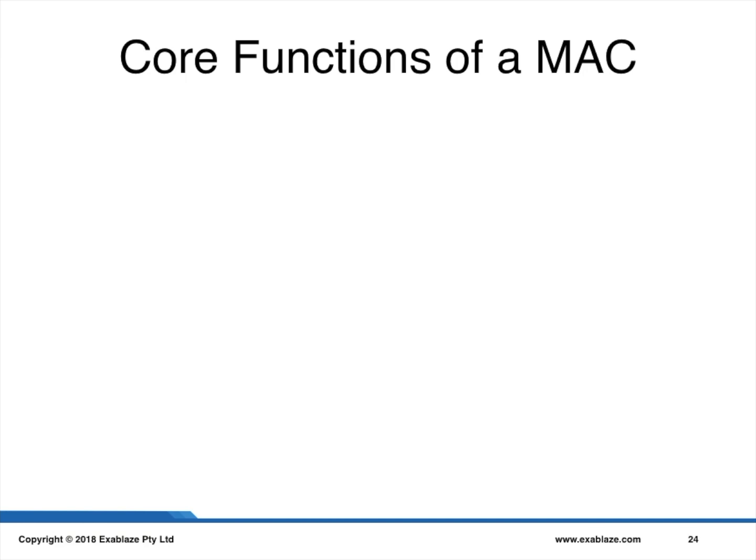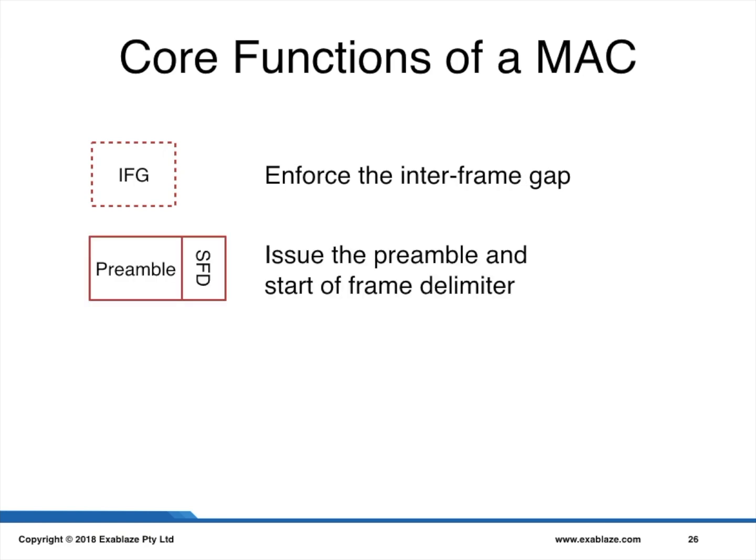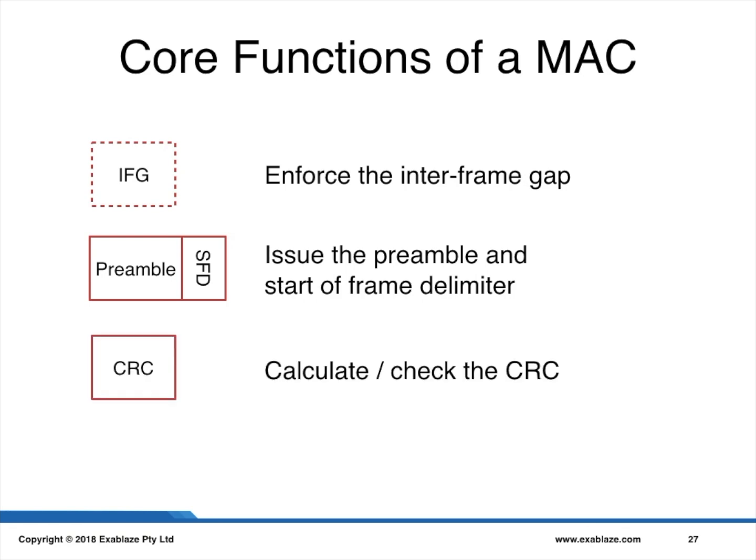The core functions of an Ethernet MAC are: first, to enforce the inter-frame gap, which is the minimum time in between frames; secondly, to issue the preamble and start-of-frame delimiter when sending frames, and to strip them when receiving frames; and finally, to calculate or check the CRC when sending or receiving frames.